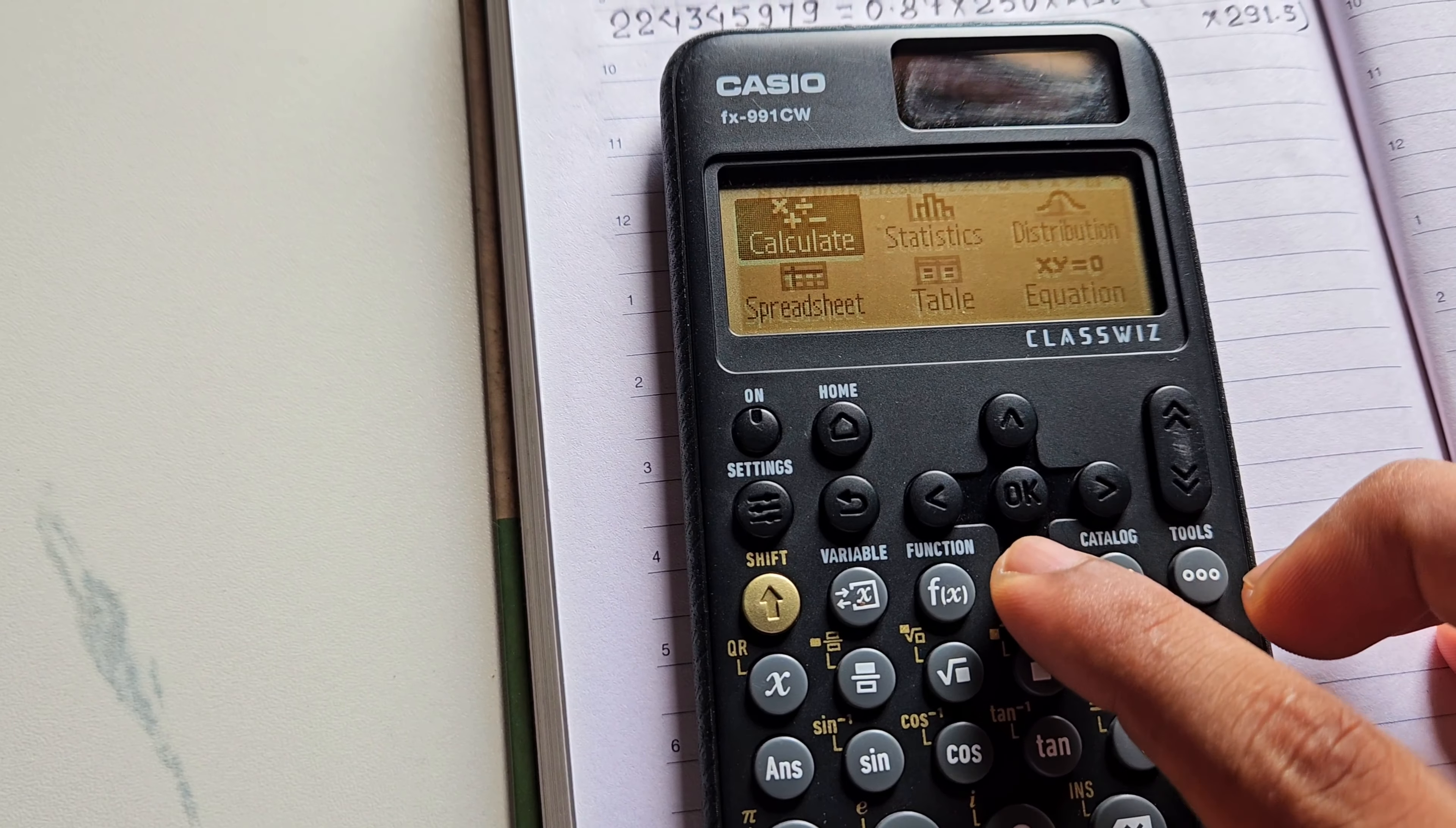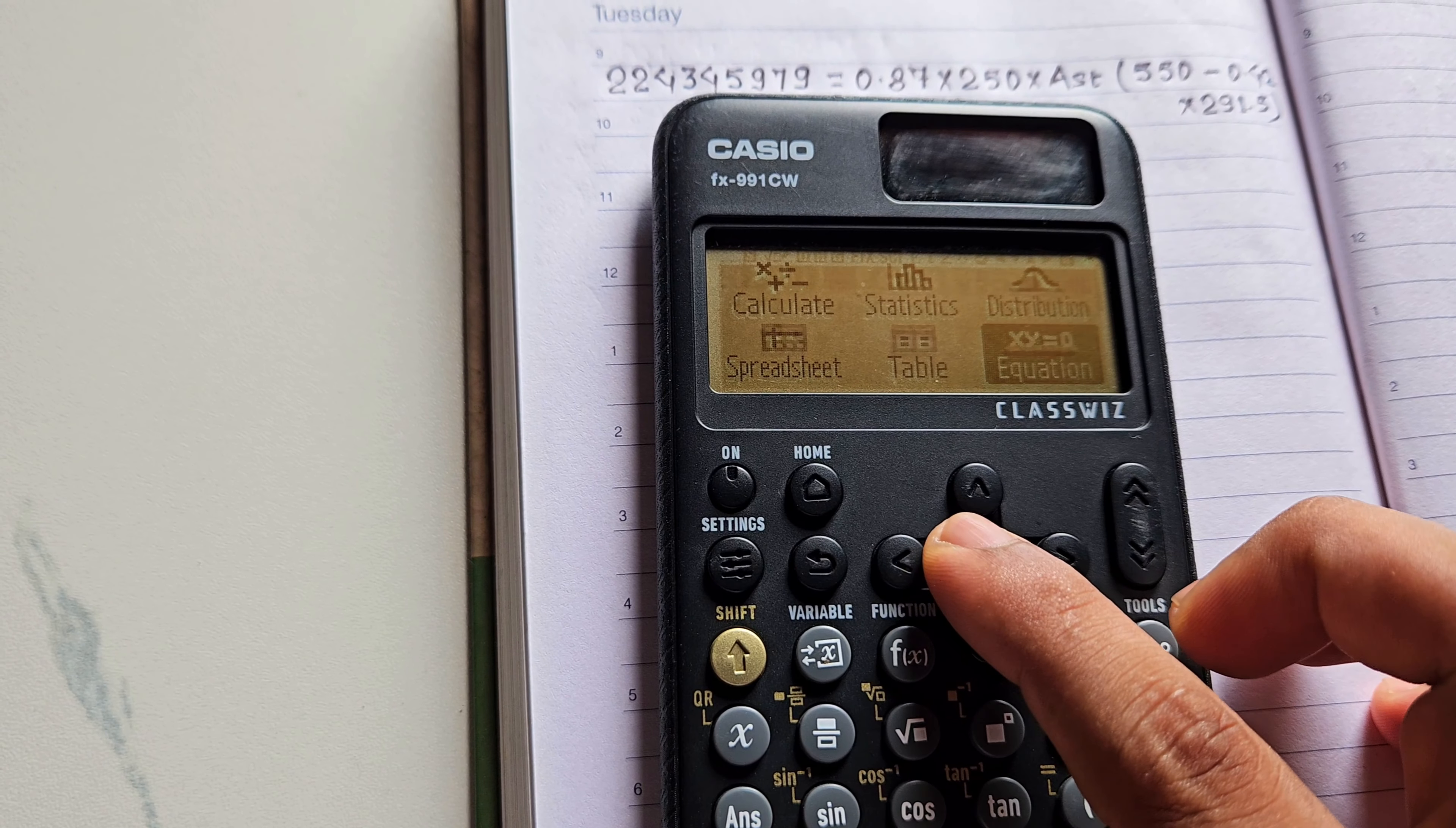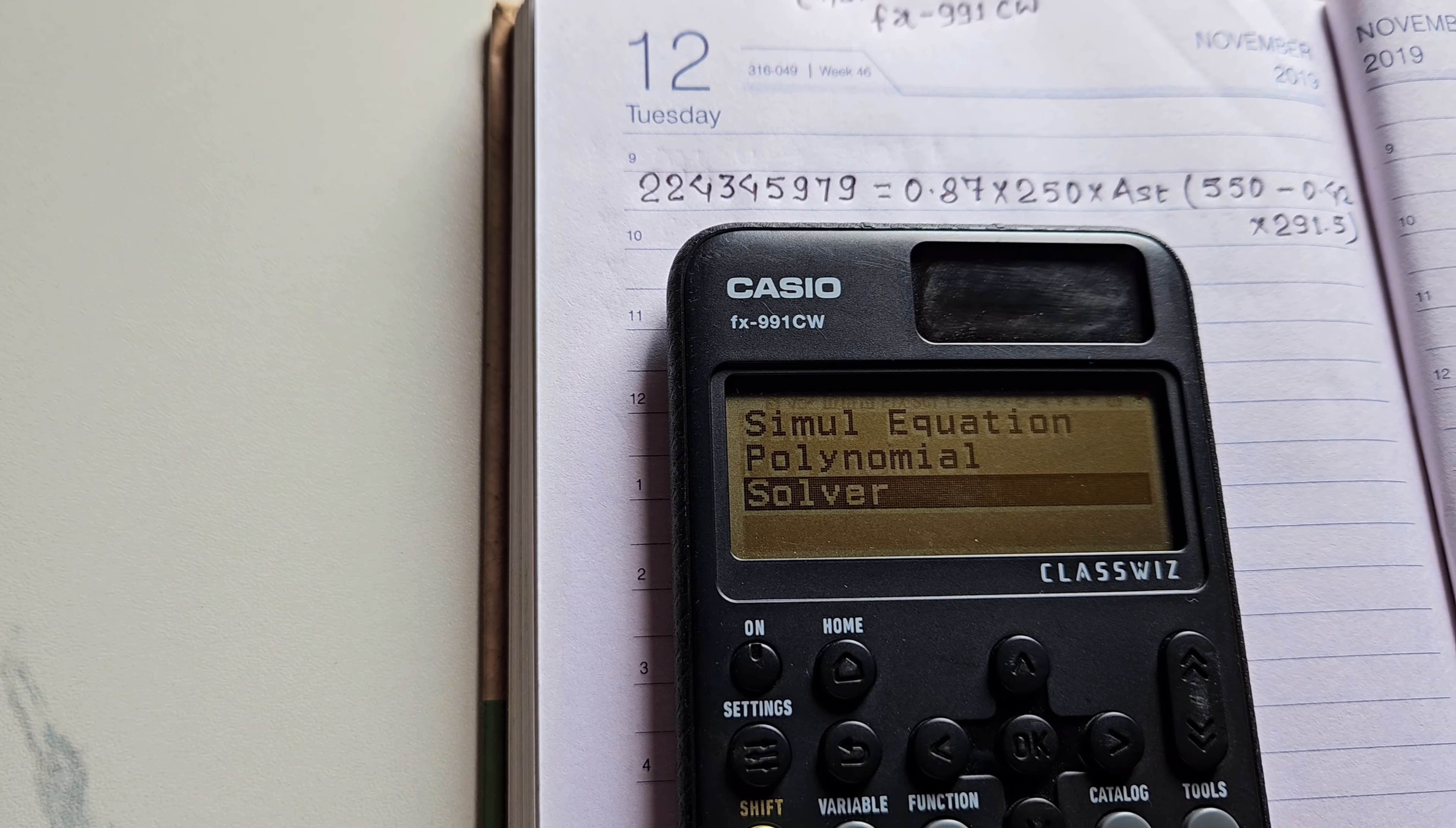Then here you can find so many options. First one here, we have calculate, statistics, distribution, spreadsheet, table, equation, and so many. We have to go to equation option. Click on OK. And then we have here in the first option, you can see simultaneous equation, then polynomial, and then solver. To solve the equation, we will go to solver.